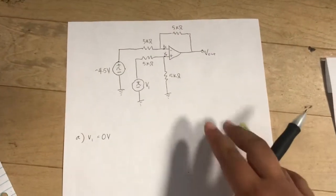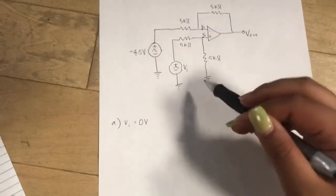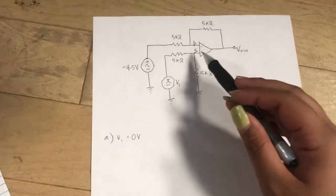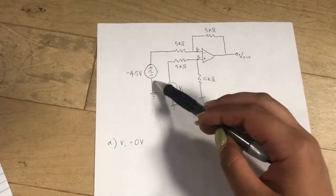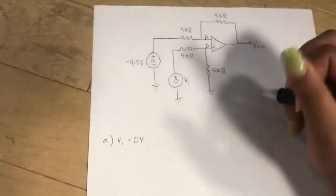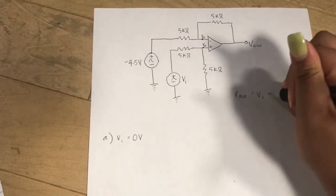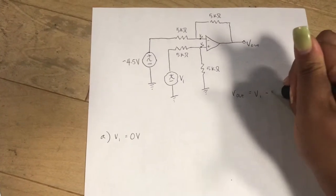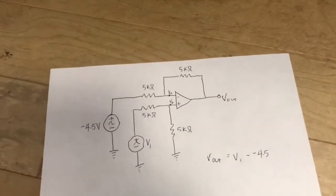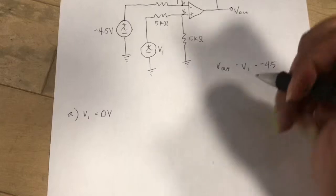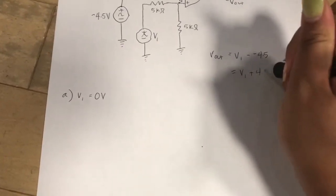and it shows a differential op amp. The equation for a differential op amp is the input on the positive minus the input on the negative. So here it would be Vout equals V1 minus negative 4.5, which equals V1 plus 4.5.